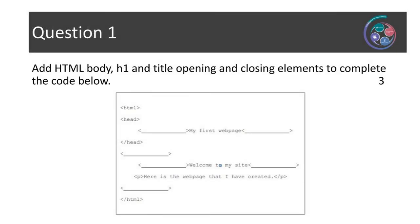Let's start by looking at the first question. The question says: add HTML body, h1, and title opening and closing elements to complete the code below, and it's worth three marks. So we know we're going to need to add some HTML, and we've been given the three tags we're going to need — body, h1, and title — and we need to identify both the opening and closing elements to complete the code.